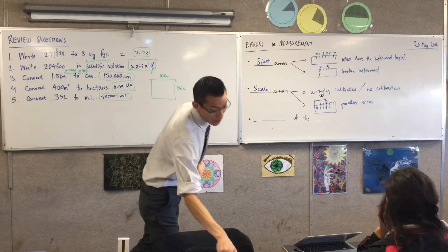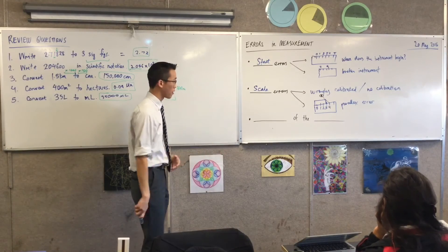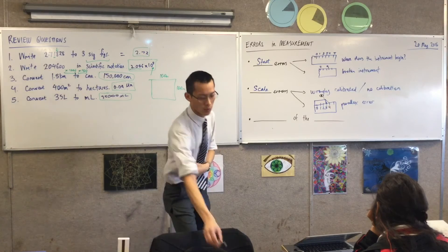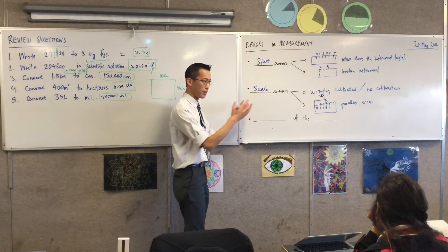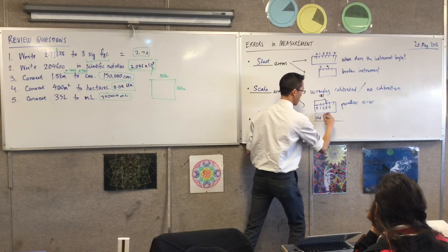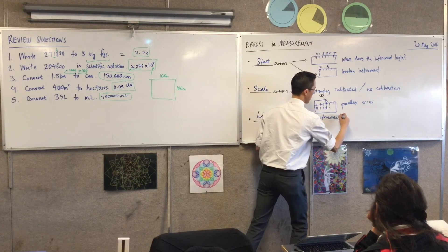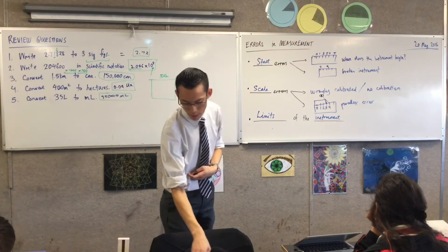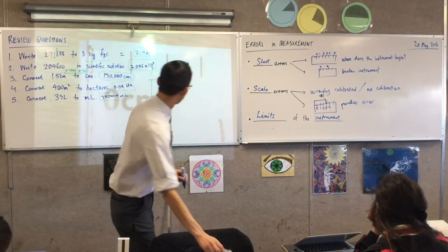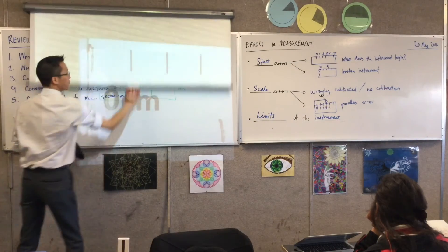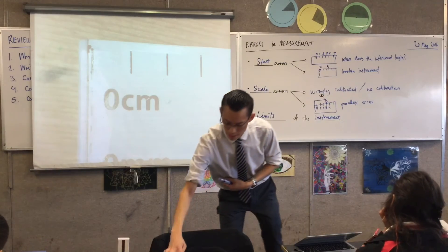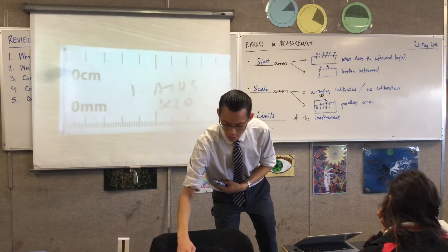One last category of error, and it's kind of the most important one for us mathematically, even though we want to take all of them into account. The last one is what we call the limit of the instrument. Now let me get this picture of my meter ruler back on the screen for you. I don't know why I just put the screen there.